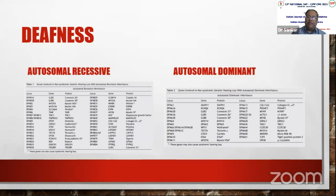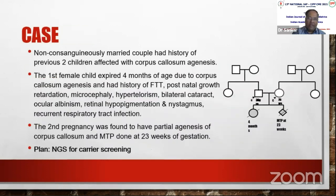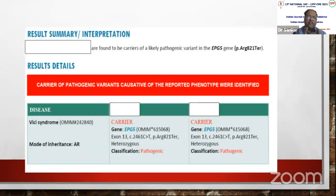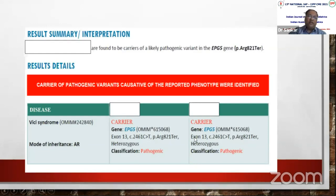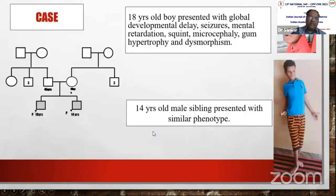In deafness, more than 75 genes are involved and cannot be easily identified, so panel testing or exome sequencing can test all relevant genes simultaneously to guide genetic counseling. In a case of corpus callosal agenesis where the baby's DNA was not available, parental testing identified both parents as heterozygous carriers of a pathogenic homozygous variant — confirming the baby was likely homozygously affected and enabling genetic counseling for the next pregnancy.